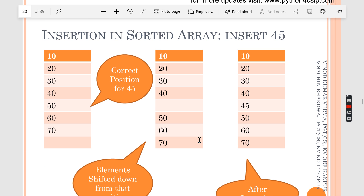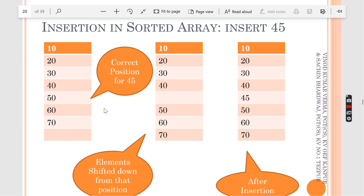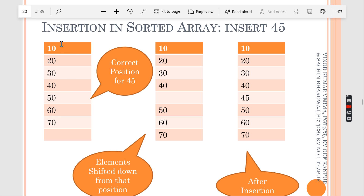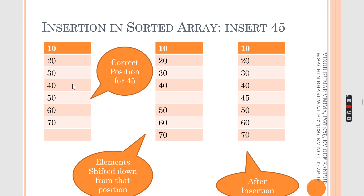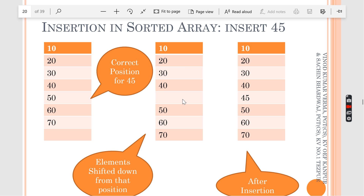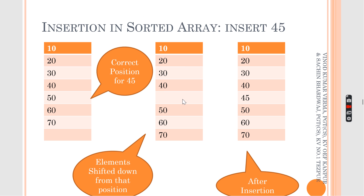Let us take an example of insertion of a sorted list. Sorted means every element will be in ascending order or descending order. Here all the elements are arranged in ascending order: 10, 20, 30, 40, 50, 60, 70. Now if you want to insert 45, it should go in between 40 and 50. So you are going to tell the system the correct position to be inserted, which is given by bisect dot bisect.